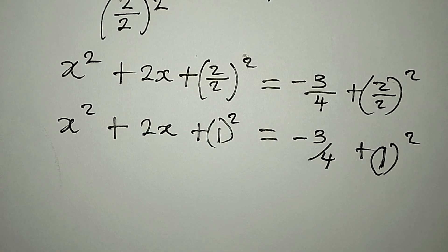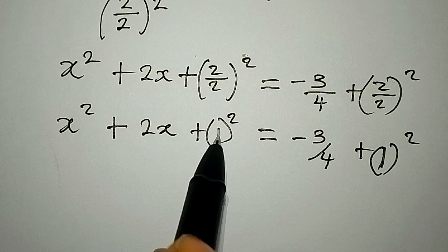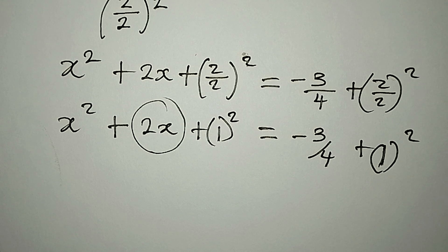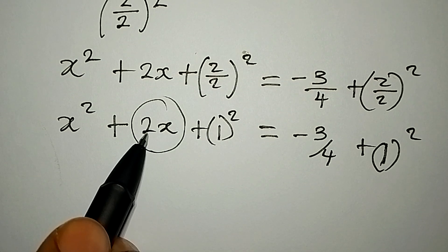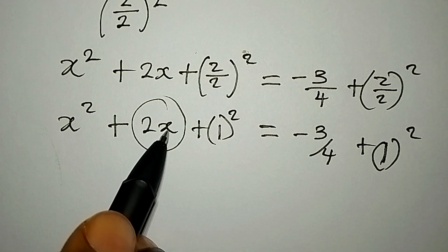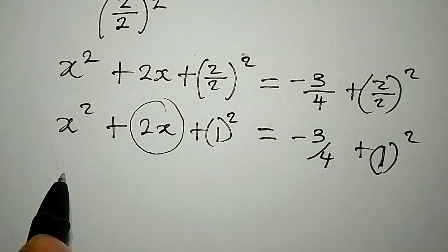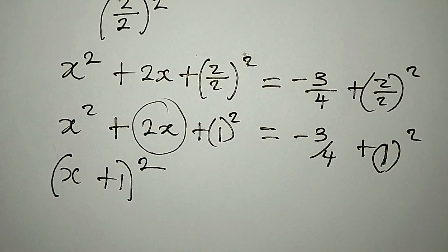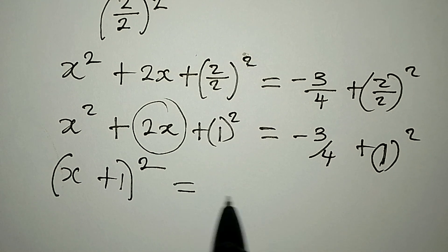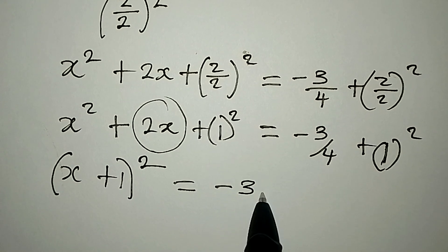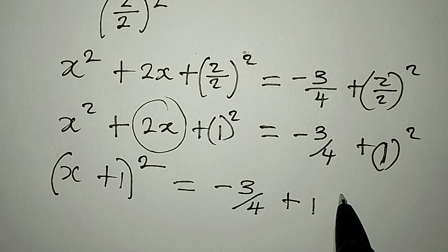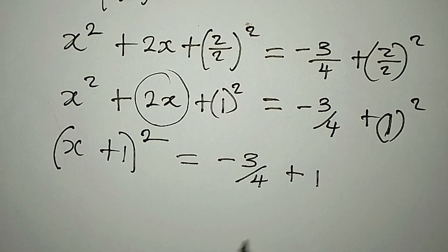Now from here, since I have already taken the completing term, I'm going to combine the left-hand side. That's one of the mistakes that a lot of students make. So I'll do away with the separate terms and combine them. So I'm going to have (x + 1)², equal to negative 3 over 4 plus 1², and 1 squared still gives us 1.